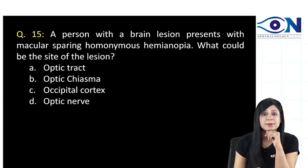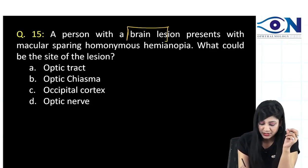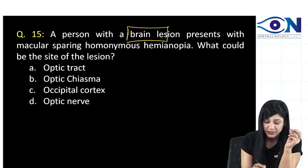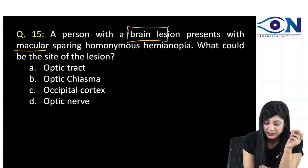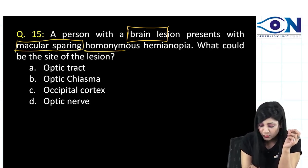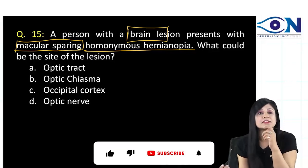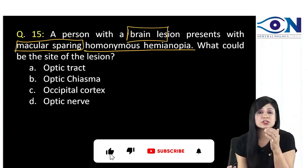Coming to the next question: a person with a brain lesion is presenting with macular sparing and homonymous hemianopia. What could be the site of the lesion?